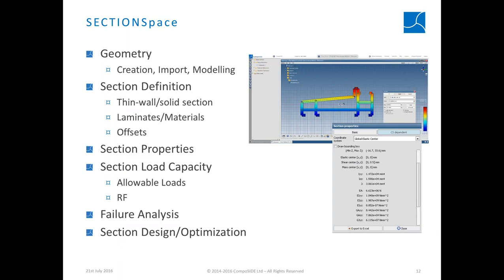Section Space is the 2D and beam modeling tool. It allows you to create, import, or model your own 2D sections defined as thin-walled or solid sections. You can double-click on any section and directly apply laminates or materials to perform calculations, review section properties, and perform a load capacity analysis reviewing level loads and reserve factors. It's a very fast 2D tool to design and optimize sections before going into 3D modeling.